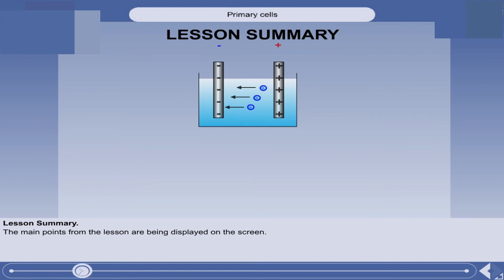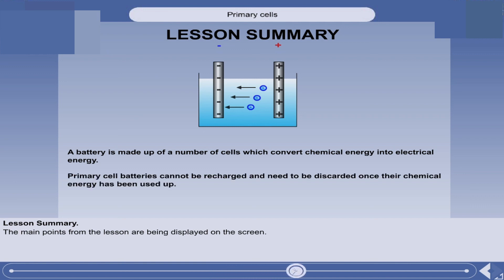That is the end of the lesson. You now know that a battery is made up of a number of cells which convert chemical energy into electrical energy. You also know that primary cell batteries cannot be recharged and need to be discarded once their chemical energy has been used up.